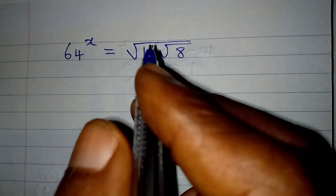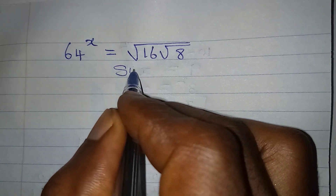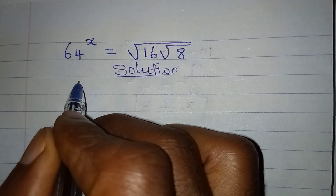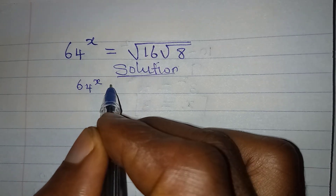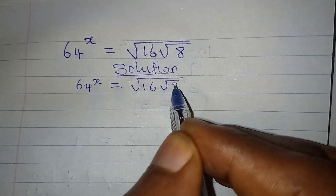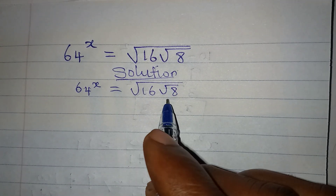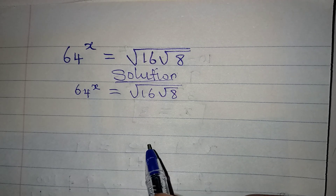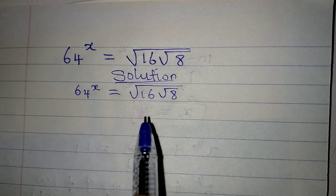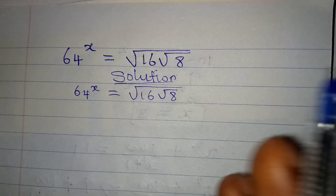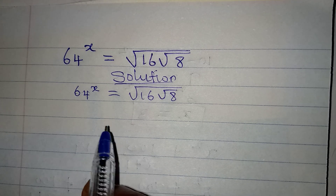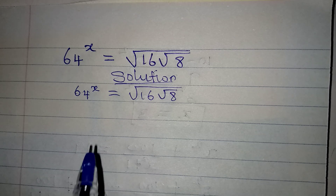Let's provide the solution to this problem right away. We have 64 to the power of x equal to the square root of 16 multiplied by the square root of 8. This is simple, but one thing that will confuse learners is seeing these multiple square root signs — they wouldn't know how to deal with it. Let's look at how we're going to handle this.